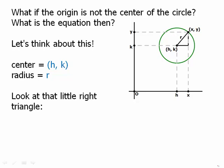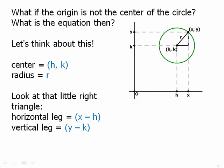We'll look at that little right triangle — the one that has a hypotenuse of r, a horizontal leg, and a vertical leg. The horizontal leg is the distance between x and h, so it's x minus h (or the absolute value of x minus h). Similarly, the vertical leg is the distance between y and k, so y minus k. It doesn't matter because we're going to square those anyway. The horizontal leg squared plus the vertical leg squared must equal the hypotenuse squared, which is r. That gives us the formula: (x - h)² + (y - k)² = r², the general formula for a circle with center (h, k) and radius r.